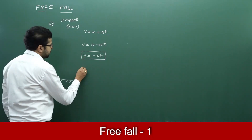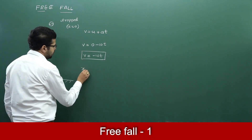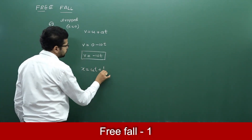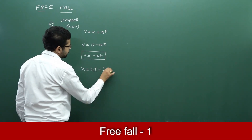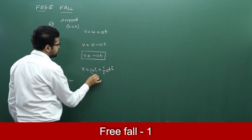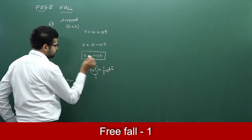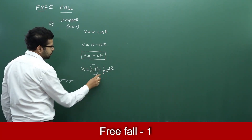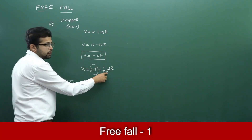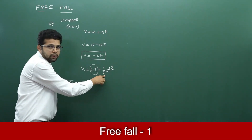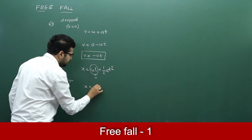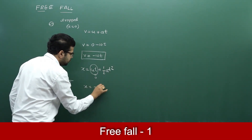Now we will see what happens to the equation x = ut + ½at². Since u is 0, the ball is dropped. So x = (minus 10)/2 × t² = minus 5t².